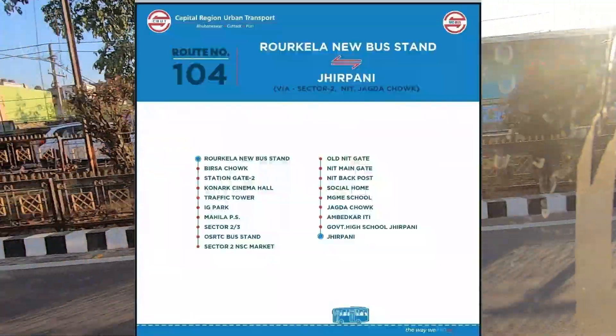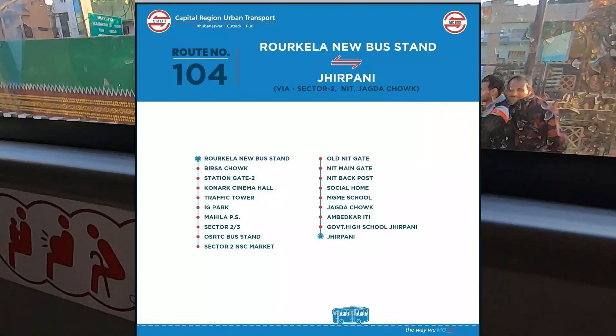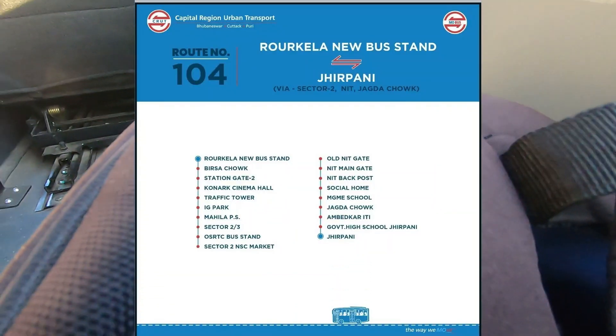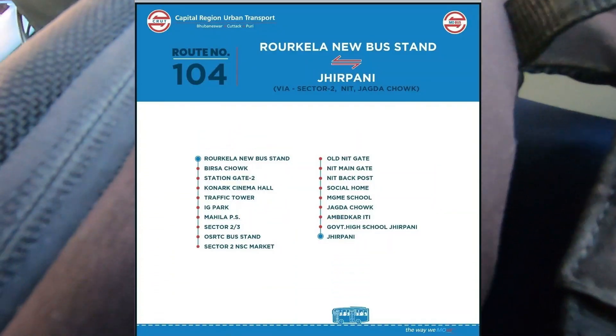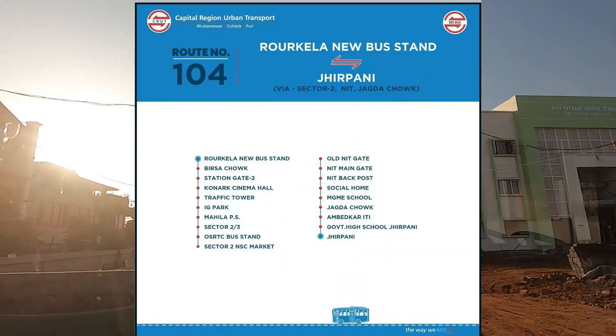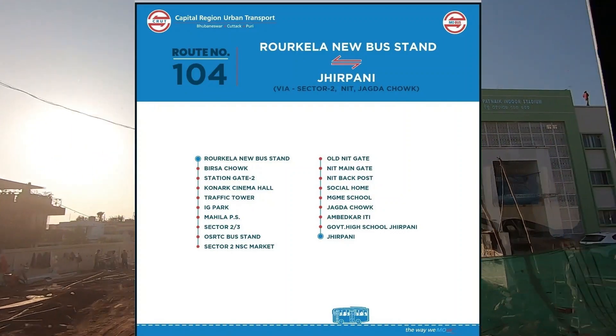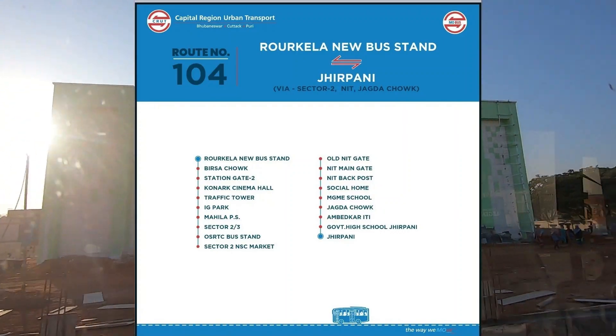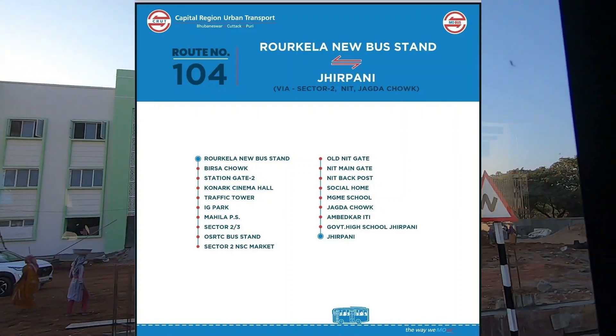Route number 104: Raurkela new bus stand to the airport and back. Via Sector 2, NIT, Jagda Chowk, Government High School, and Jhirpani.